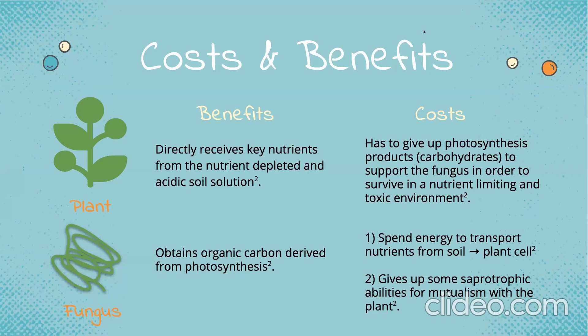To gain certain benefits essential for survival, each organism must also pay a price. The plant species benefits by directly receiving access to key nutrients from the surrounding nutrient-depleted and acidic soil solution. In return, the fungus obtains photosynthesis-derived organic carbon from the host plant in the form of sugars. The plant must give up some of its photosynthetic products to survive in a nutrient-limiting and toxic environment, and in return the fungus must spend energy to transport nutrients from the soil to the plant cell, giving up some of its saprotrophic abilities to form this mutualistic relationship.